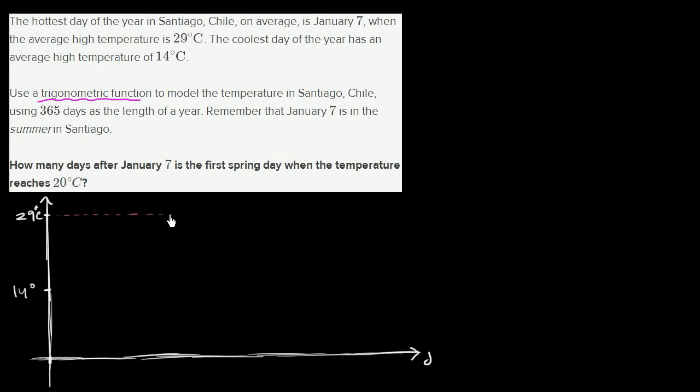Our temperature is going to vary between the highest average day, which they already told us is January 7, we get to 29 degrees Celsius, and then the coldest day of the year, on average, you get to an average high of 14 degrees Celsius. We're talking about average highs on a given day. The reason why a trigonometric function is a good idea is because it's cyclical. This is January 7. If you go 365 days in the future, you're back at January 7.